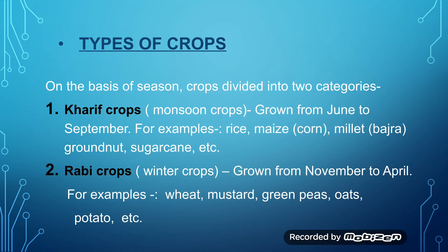Types of crops. Crops are basically two types: Kharif crops and Rabi crops. Crops are mainly divided into two types on the basis of season. We cannot grow any crop at any time because each crop requires a suitable time, period, or season to grow.